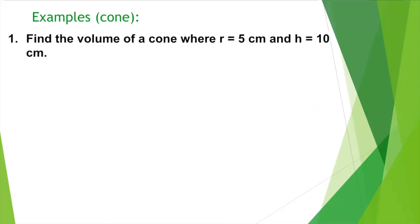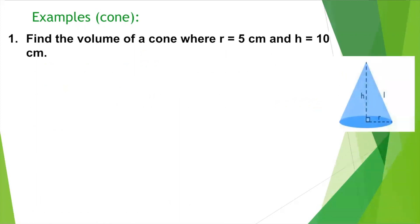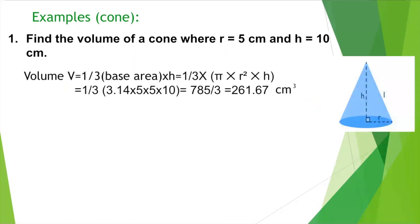Find the volume of a cone where R equals 5 cm and H equals 10 cm. Volume equals one third pi R squared H: one third times 3.14 times 5 times 5 times 10. Multiplying gives 785, then dividing by 3 gives 261.67 cm cubed. For all 3D figures, volume units are cubed and surface area units are squared.